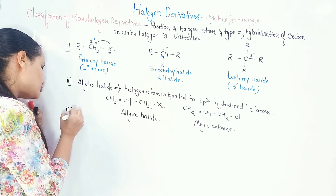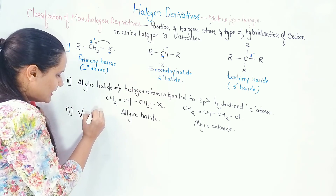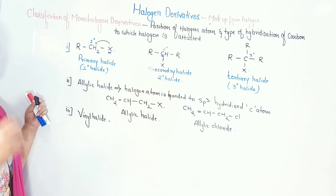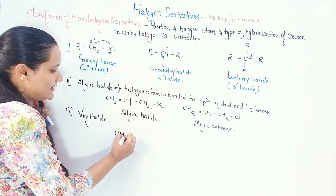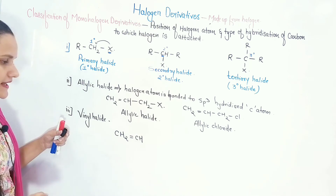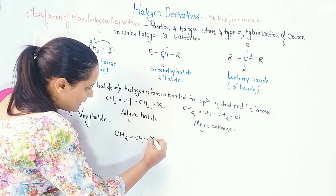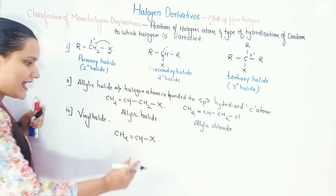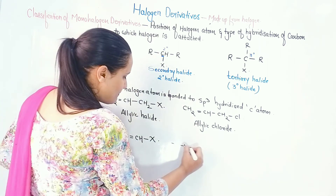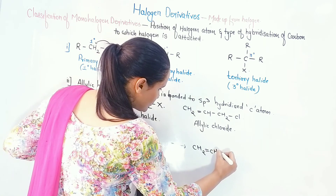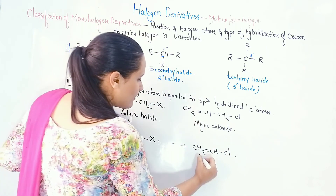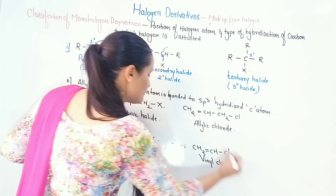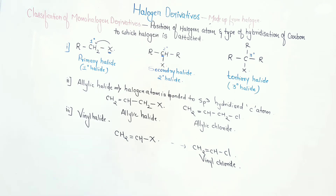The next classification is vinyl halide. CH2=CH- is called vinyl. If a halogen is attached directly to the vinyl group, we call it a vinylic halide. For example, CH2=CH-Cl is known as vinyl chloride. So this is how we classify — allylic halide has the halogen on sp3 carbon adjacent to the double bond, while vinylic halide has the halogen directly on the sp2 carbon of the double bond.